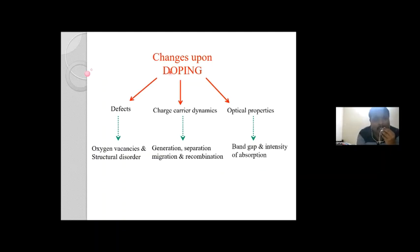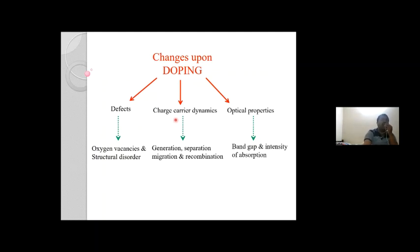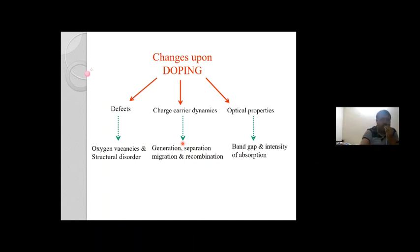What exactly happens upon doping is that, depending on the charge difference of host and guest and the ionic radius, you observe either structural disorder or oxygen vacancies. Defects can also serve as charge carrier traps, creating alternative pathways for generation, separation, and recombination. Optically, if doping states are within the band gap edges, narrowing of the band gap is observed; if above the conduction band edge or below the valence band edge, band gap widening occurs.